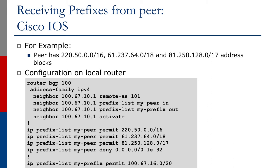As you can also see, your prefix in this case is configured on the prefix list called "my prefix" and assigned to the outbound filter of the peer configuration using the third neighbor configuration statement, ensuring that only that prefix will be announced to the neighbor.